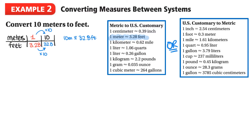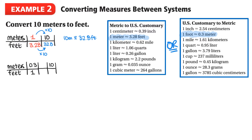Now we'll do this question using the other chart with a ratio table - meters on top, feet on bottom. From that table, 1 foot equals 0.3 meters, but I want to get to 10 meters. Since 0.3 to become 10 is not straightforward, I'll need to use the unit rate. I extend the chart, putting 10 here, and use the unit rate with a 1 since multiplying from 1 to 10 is easy.